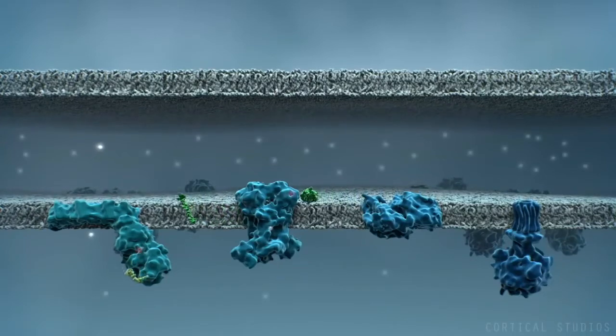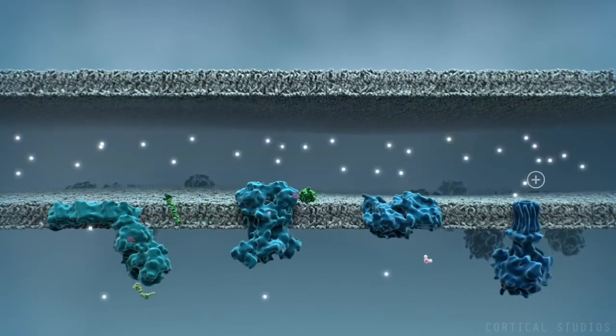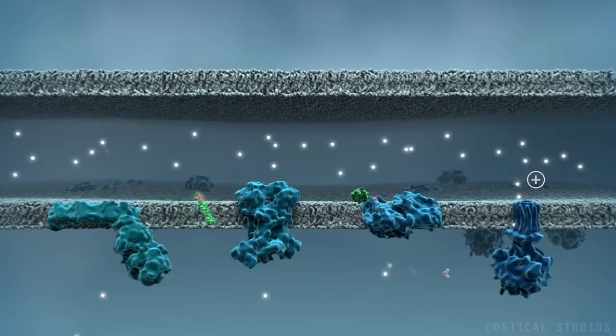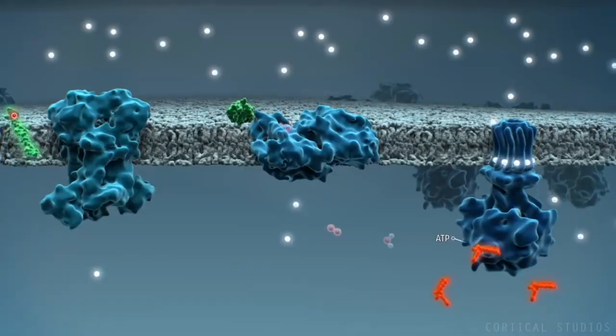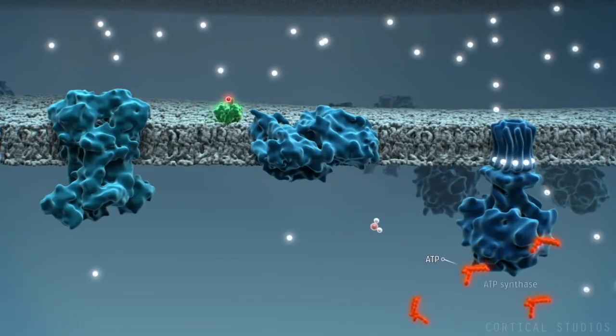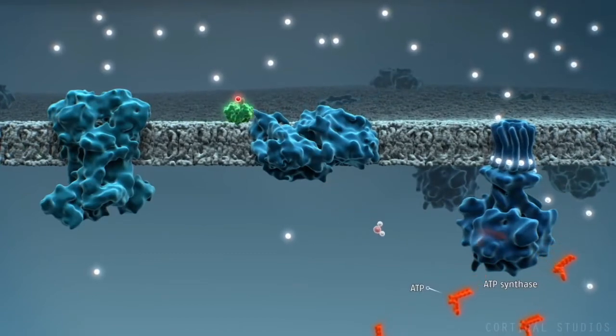This continuous pumping creates a proton gradient, where the positively charged protons are attracted to the more negative matrix. When the protons re-enter the matrix through the ATP synthase protein complex, they catalyze the production of ATP.